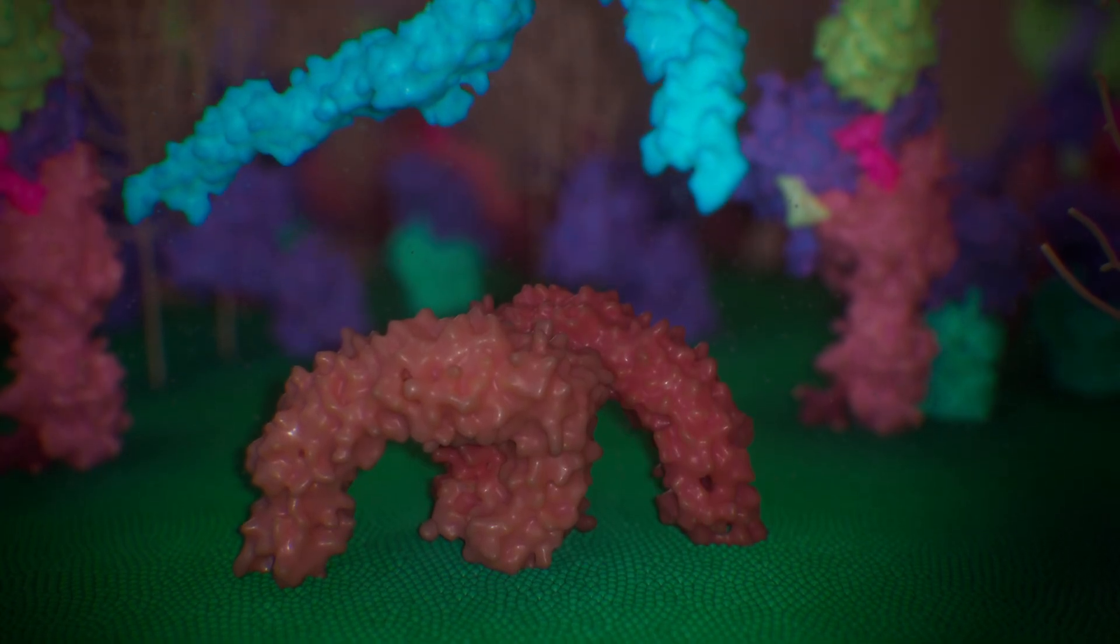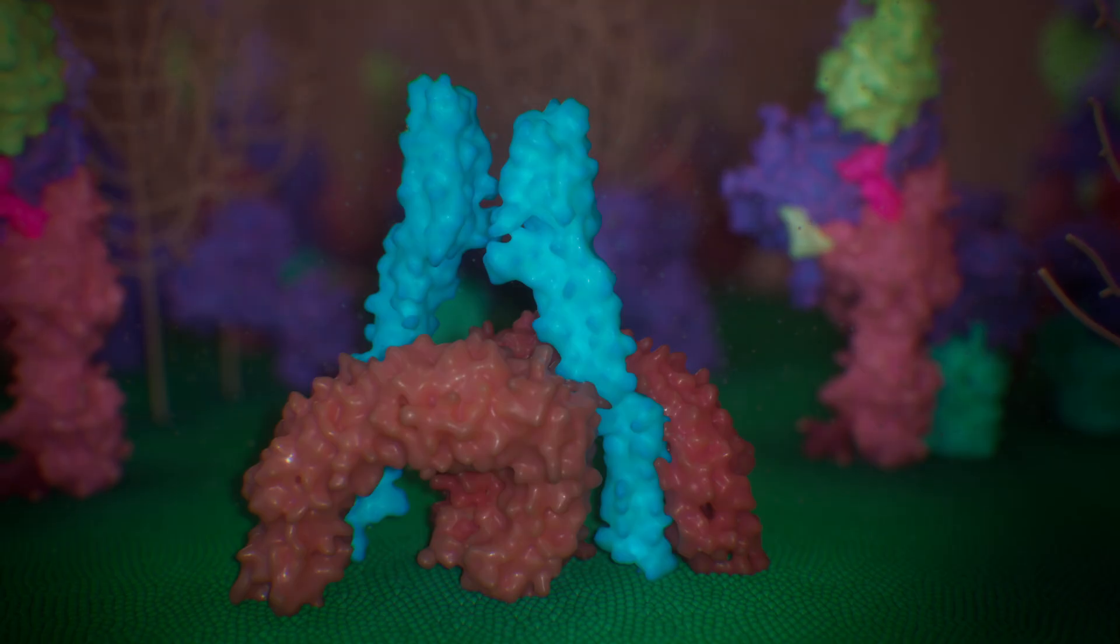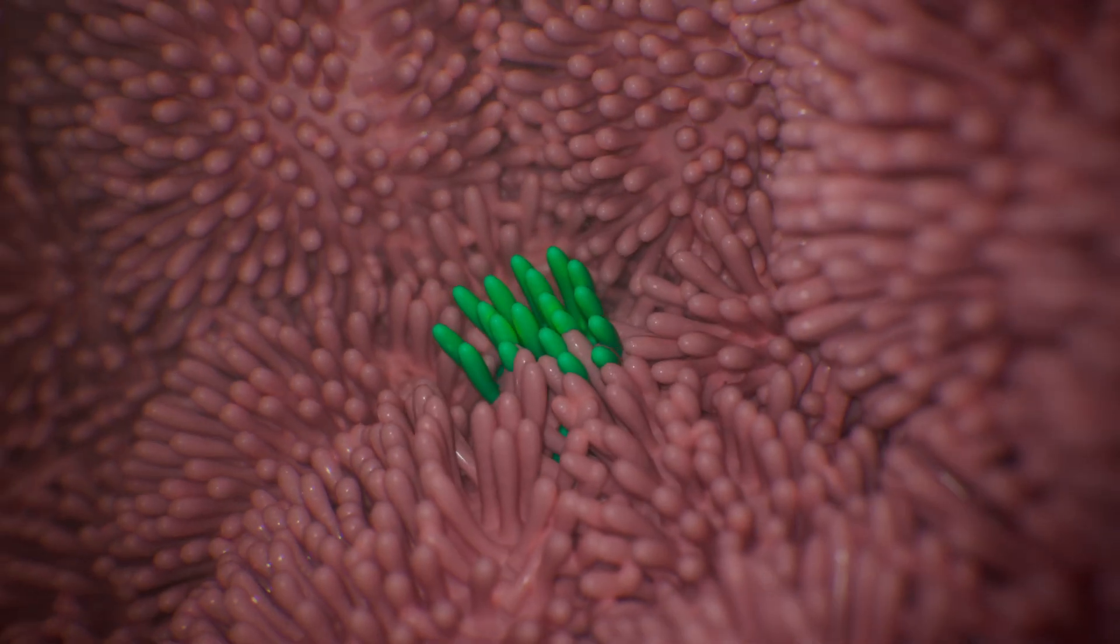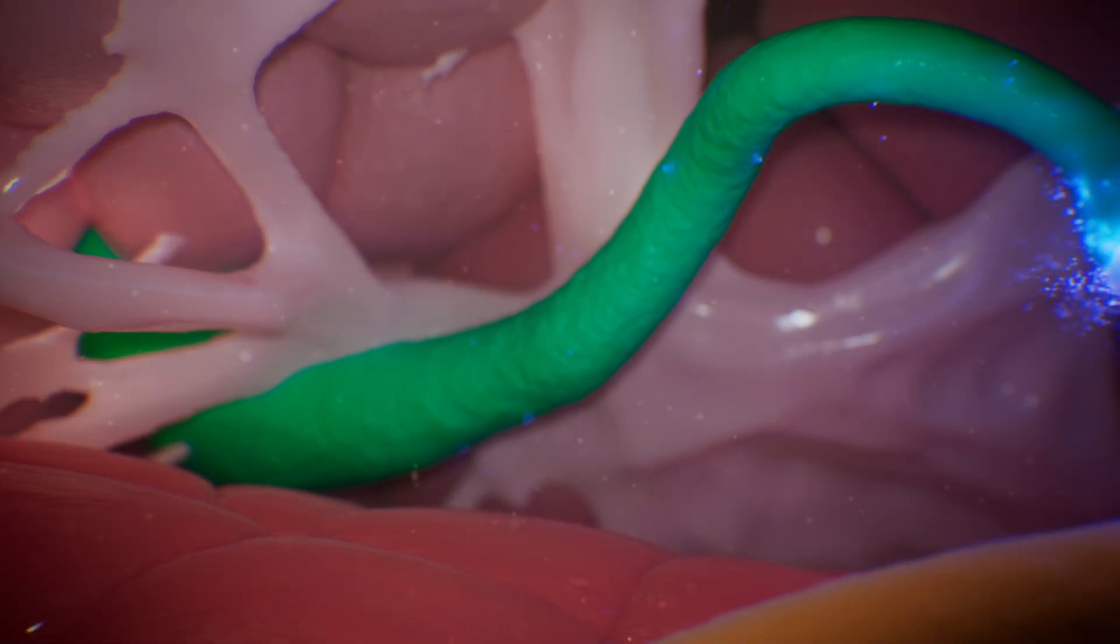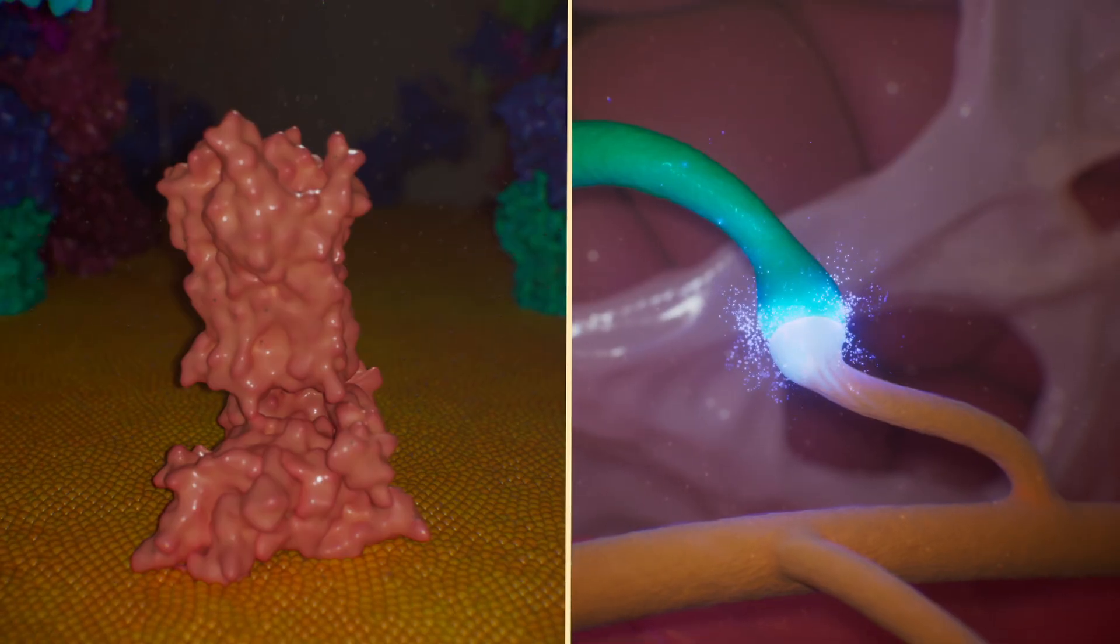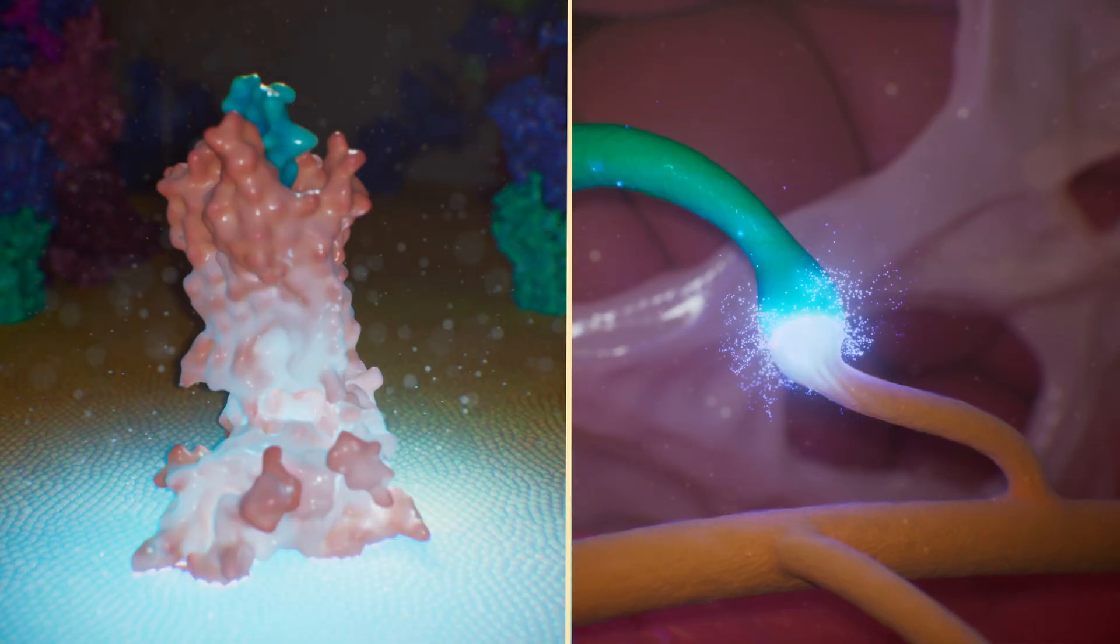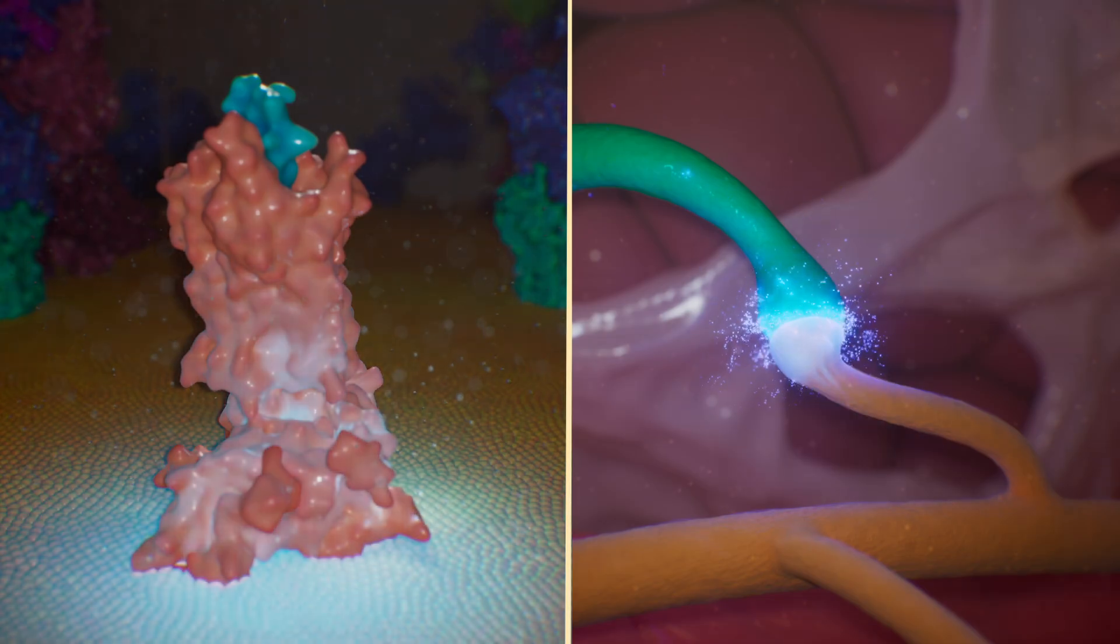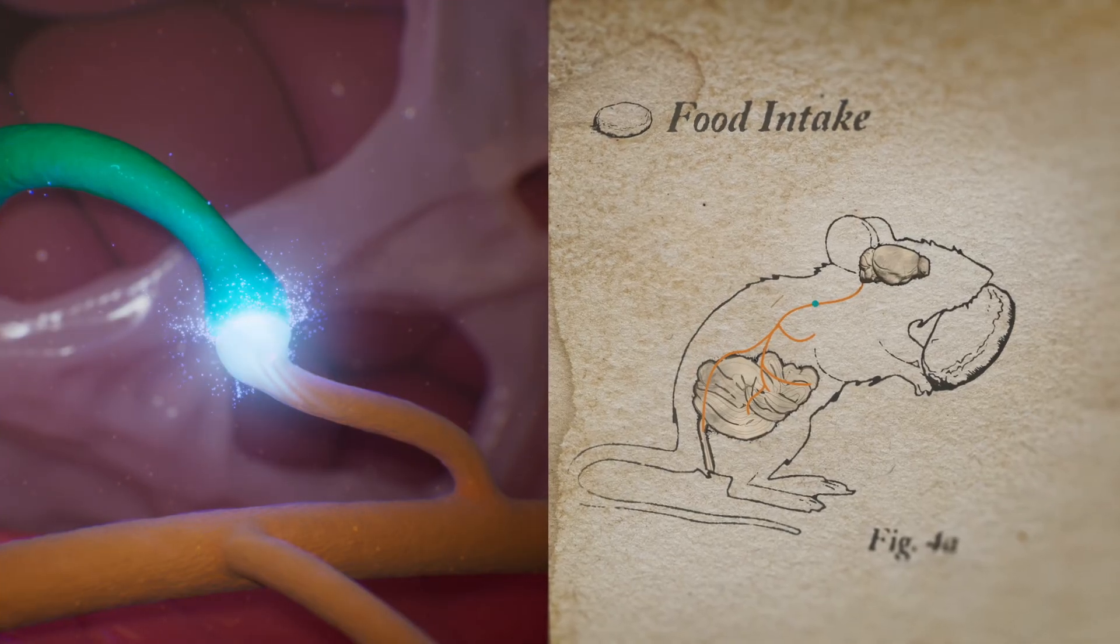The flagellin protein binds to TLR5 in neuropod cells. Instead of triggering a typical immune response, activation of TLR5 in neuropod cells leads to the release of the neuromodulator PYY. PYY activates the NPY2 receptor on vagal neurons. This sends a signal to the brain, reducing appetite.